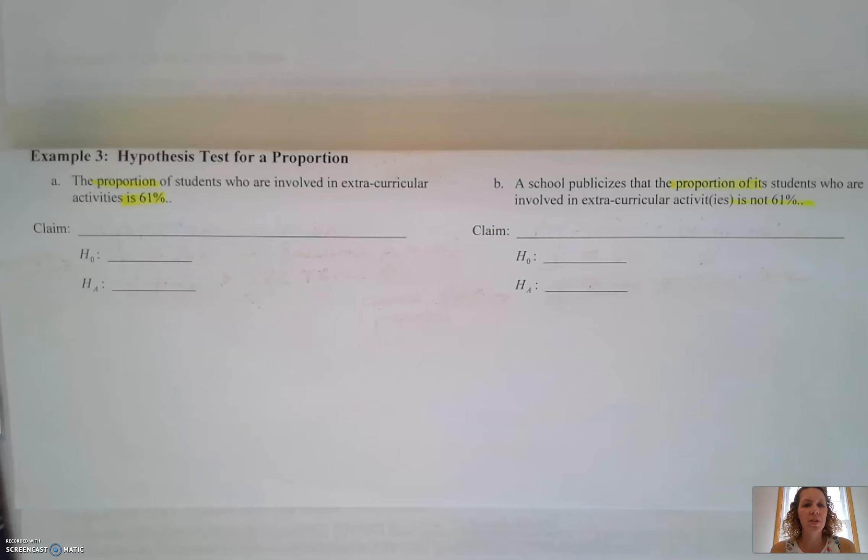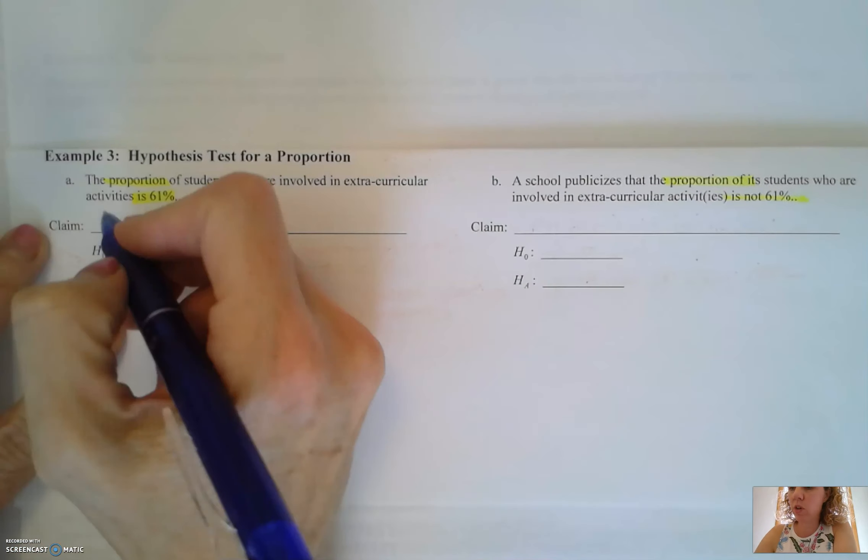Welcome to writing hypothesis test for proportion. The proportion of students who are involved in extracurricular activities is 61%. So first of all we have to write the claim in words so we know what we're testing.